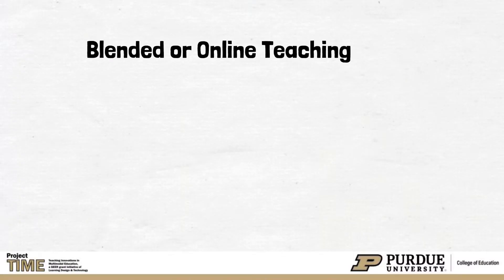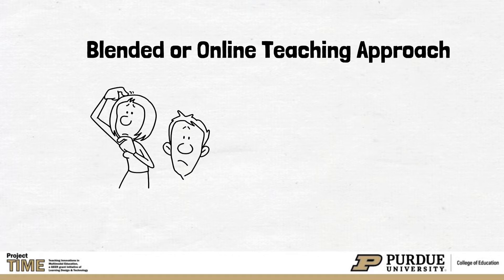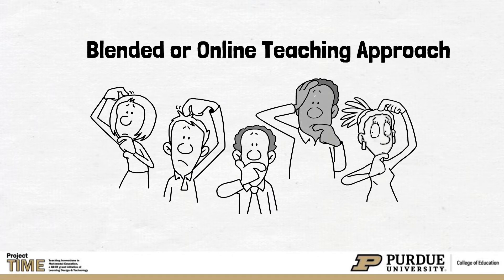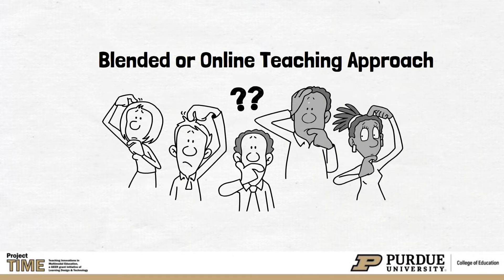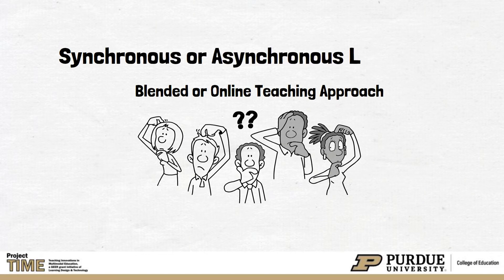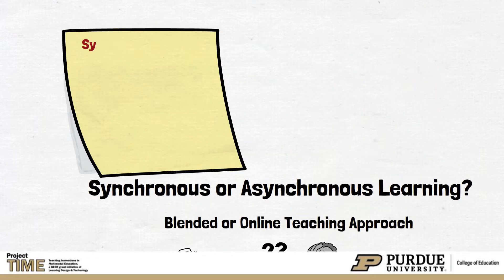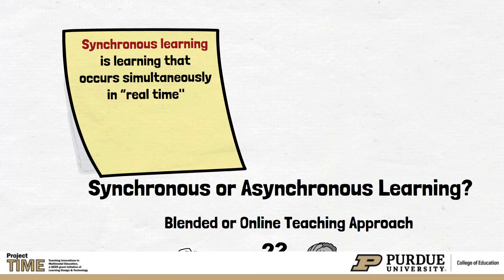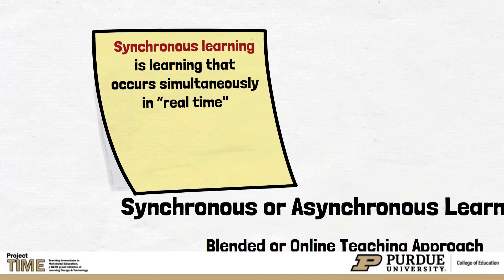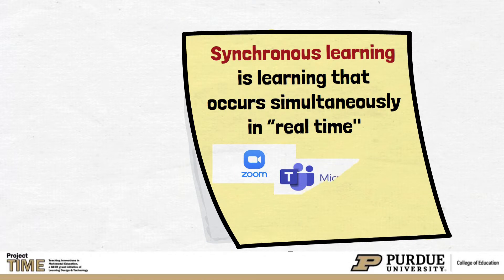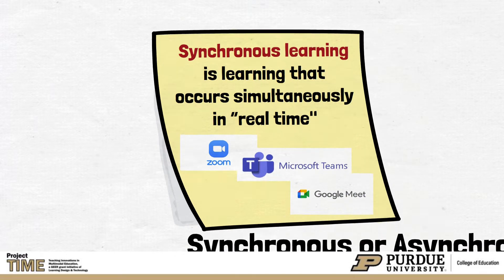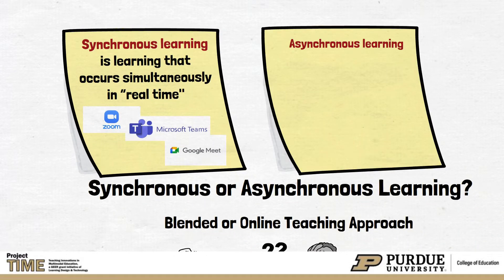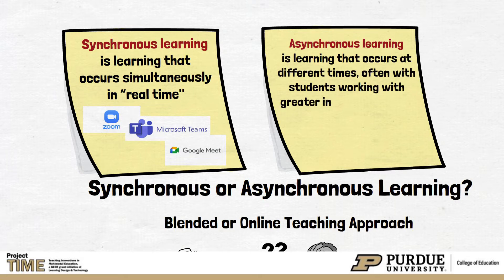When adopting a blended or online approach to teaching, one of the first questions that must be answered is if class activities should happen synchronously or asynchronously. Synchronous learning is learning that occurs simultaneously in real-time, typically using a video conferencing platform like Zoom, Microsoft Teams, or Google Meet. Asynchronous learning is learning that occurs at different times, often with students working with greater independence and at their individual pace.